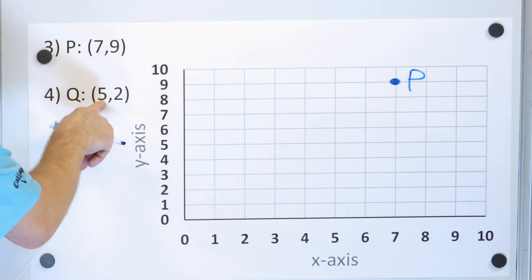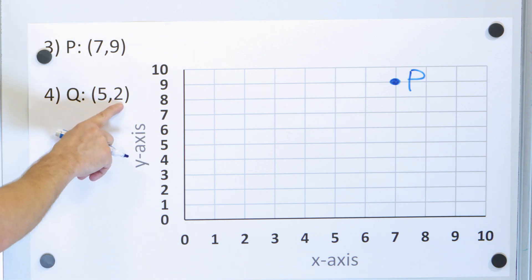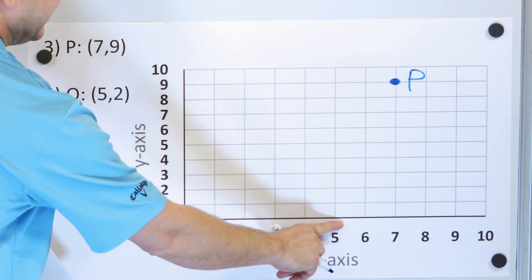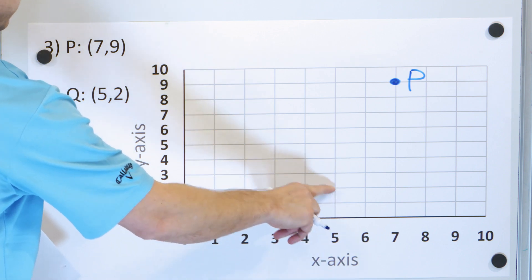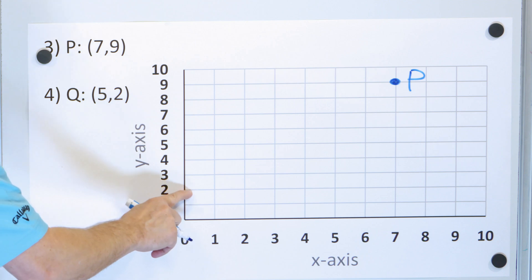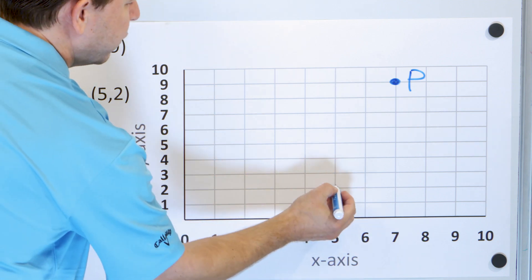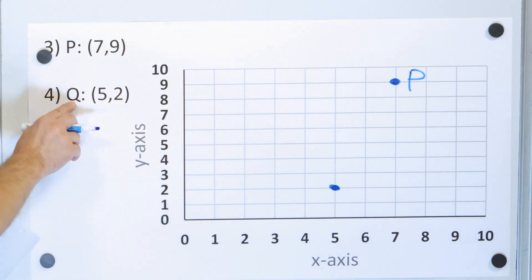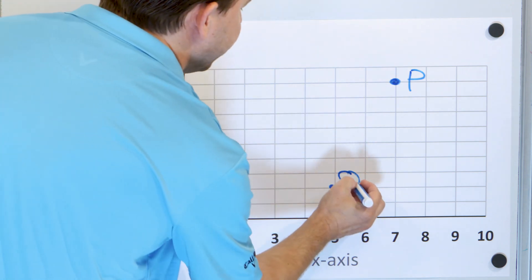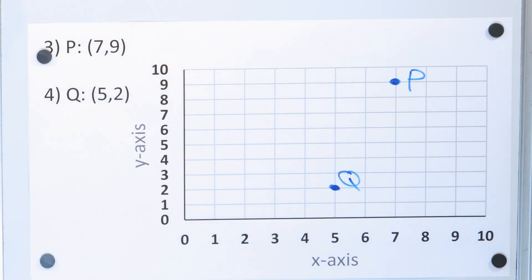Next we have point Q at 5 comma 2. X is 5 and y is 2. So we have x equals 5, which is right here, and we go up to 2 for y. Notice 2 for y right here — so 5 comma 2 means the point will be right here, and the label is Q.